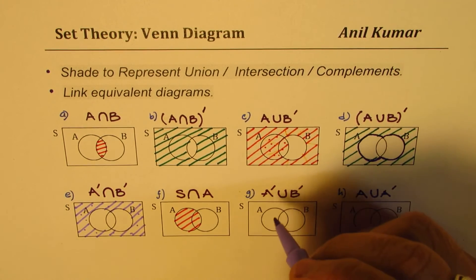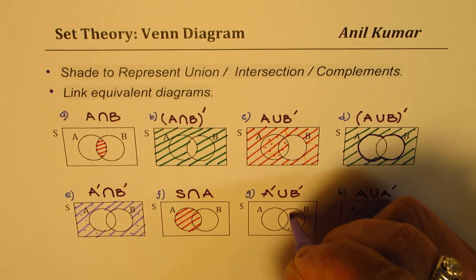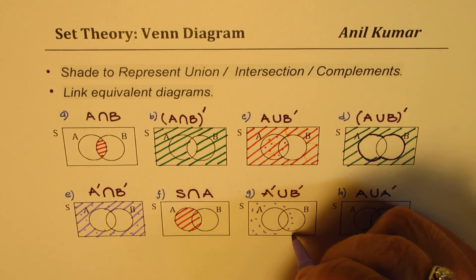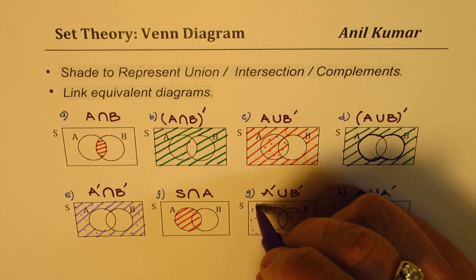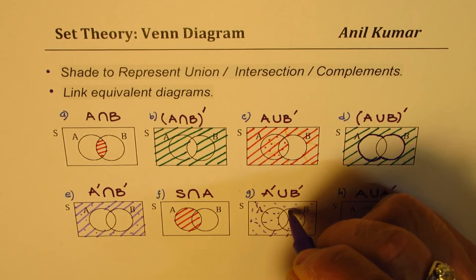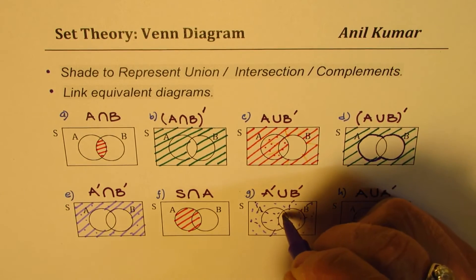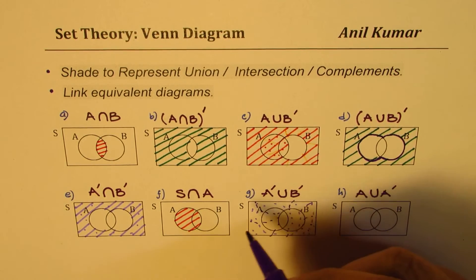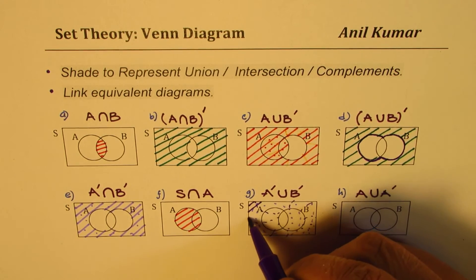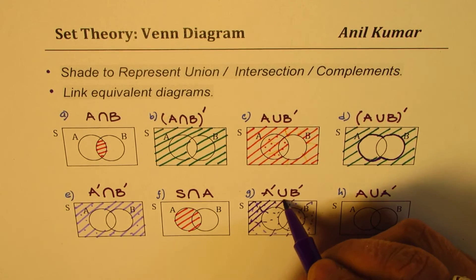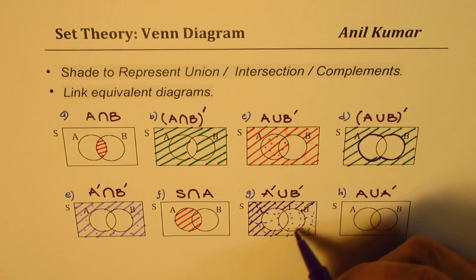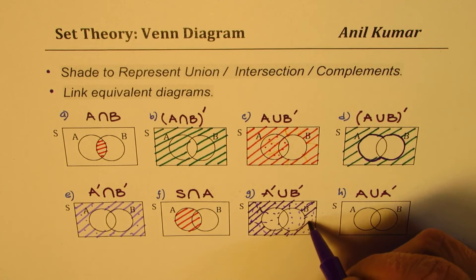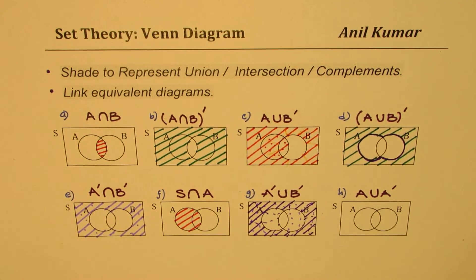The next one is the union of not-A and not-B, that is A'∪B'. Not-A means everything outside circle A, and not-B means everything outside circle B. If we leave only the portion common to both A and B unshaded, we shade the rest. With the help of Venn diagrams we can actually prove many identities based on set unions, intersections, and complements.